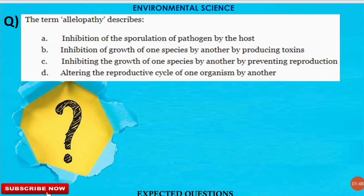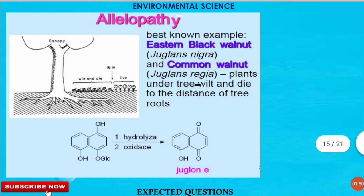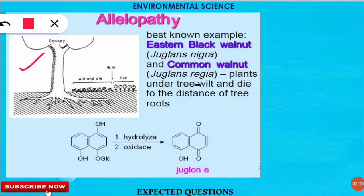To understand allelopathy more deeply, the example of the eastern black walnut (common walnut) is used. The walnut tree produces a toxin called juglone. This juglone creates an atmosphere or surrounding in which the plants under or near this tree will wilt and die within a certain distance from the tree's roots. This is a classic example of allelopathy.